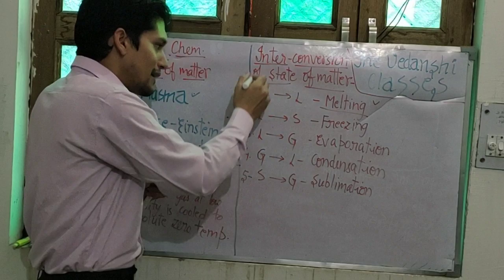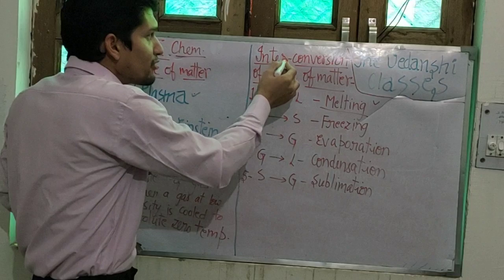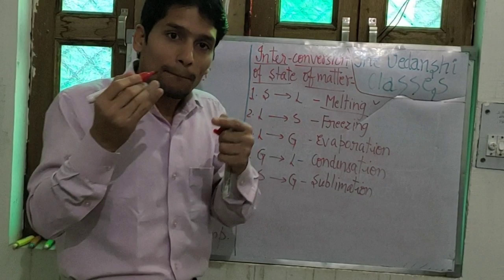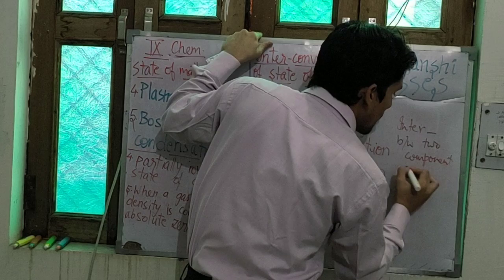Interconversion of state of matter means matter changes from one state to another, and it happens in nature consistently and naturally. The word 'inter' means between two different components — for example, inter-house competition means competition between two different houses.